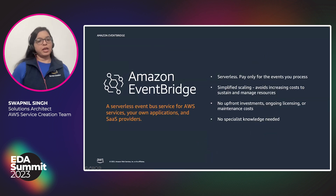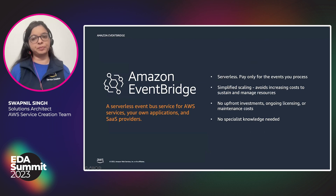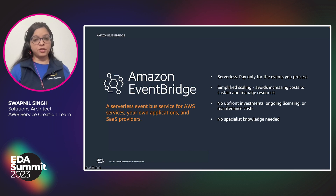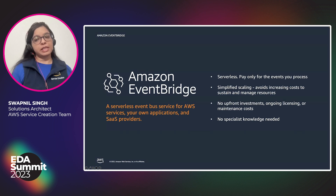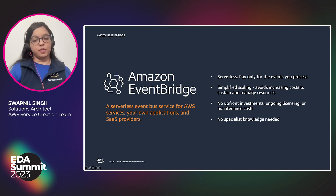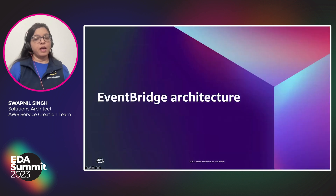EventBridge is a serverless event bus service provided by AWS. It removes the friction of writing point-to-point integrations. It is a fully managed service, so it handles everything from event ingestion and delivery to error handling, making it easy to build scalable and event-driven applications. Because EventBridge is serverless, there is no infrastructure to manage — you only pay for events you consume.